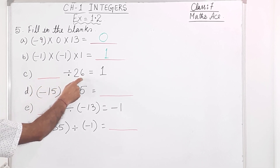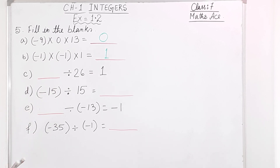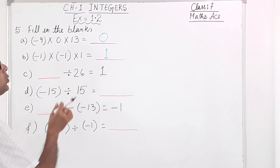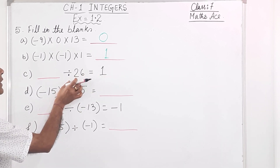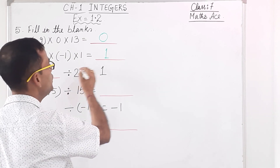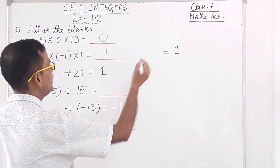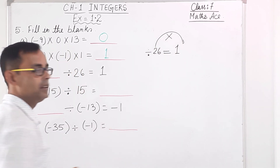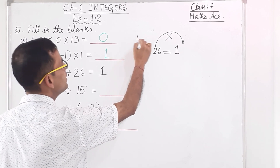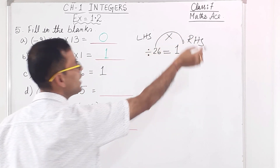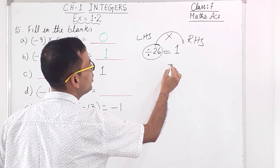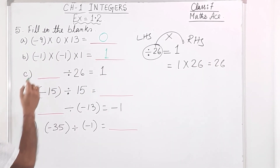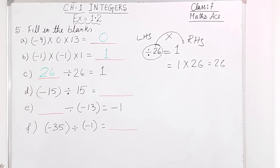Next blank: dash divided by 26 equals 1. When the 26 moves from the left-hand side to the right-hand side, division becomes multiplication. So the answer is 1 times 26, which equals 26.